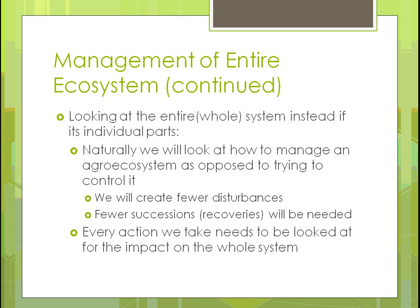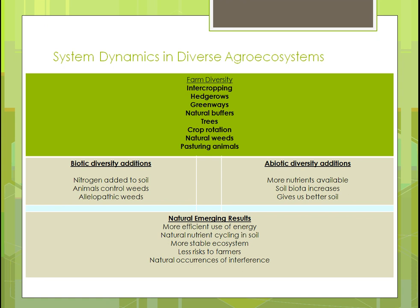Here's a chart looking at the dynamics of a diverse agroecosystem. On top, you see what types of things you could do to make a farm diverse. Intercropping is planting more than one crop in the same area — like corn and beans together. Hedgerows help with wind blocks and bring wildlife into the area, which can control harmful insects. Greenways allow water to be held longer because grassroots help aerate the field, and that keeps water from running off.